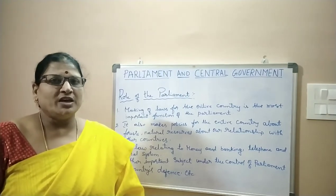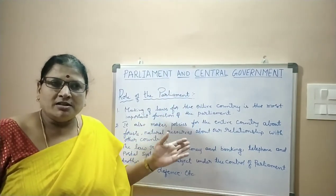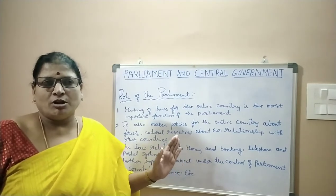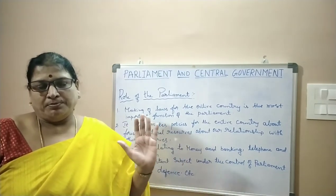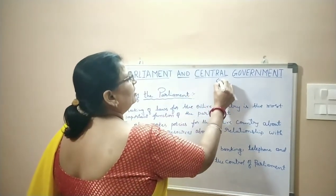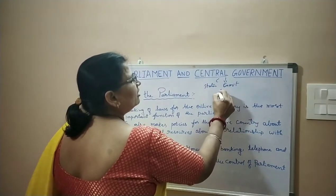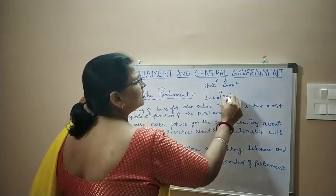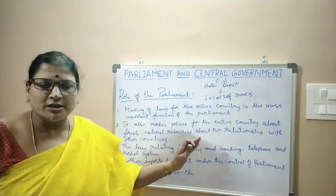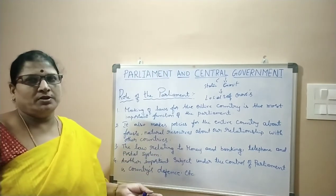What is this federal set-up? Federal set-up means we have a central government, and at the state level we have state governments, and under the state we have different local self-governments. This is called federal set-up — means the government goes near to the people. At the center we have central government, below that state governments, and below that local self-governments. The government policy should reach the people at the right time, at the right place.